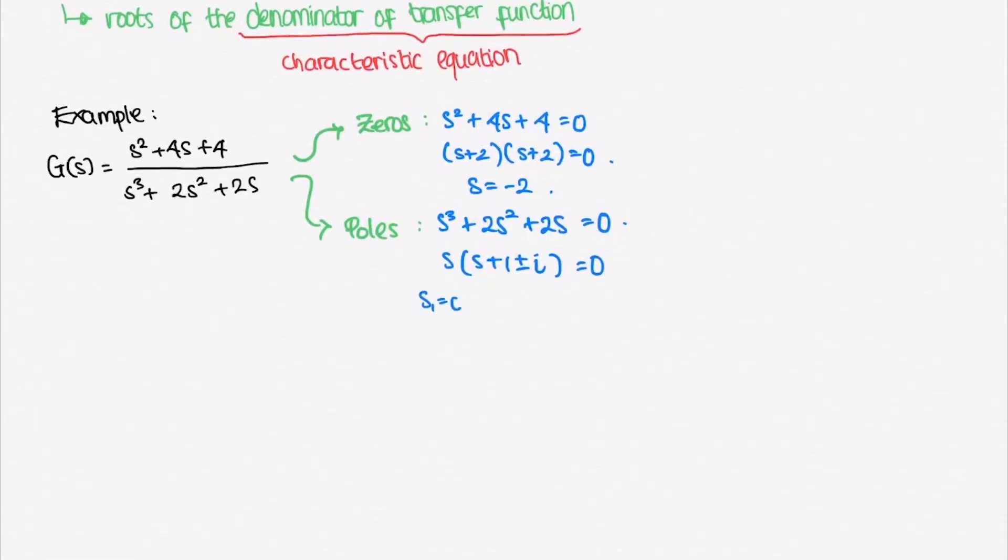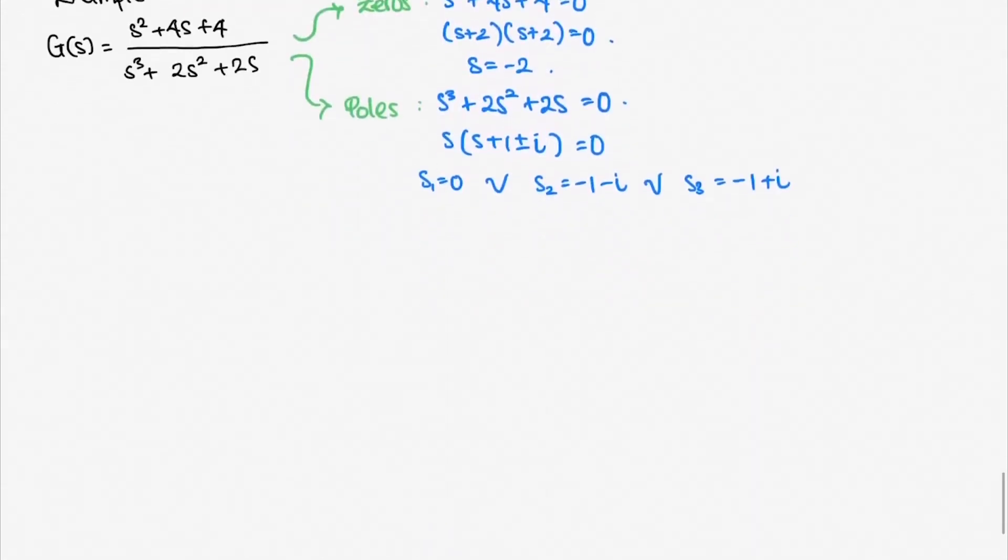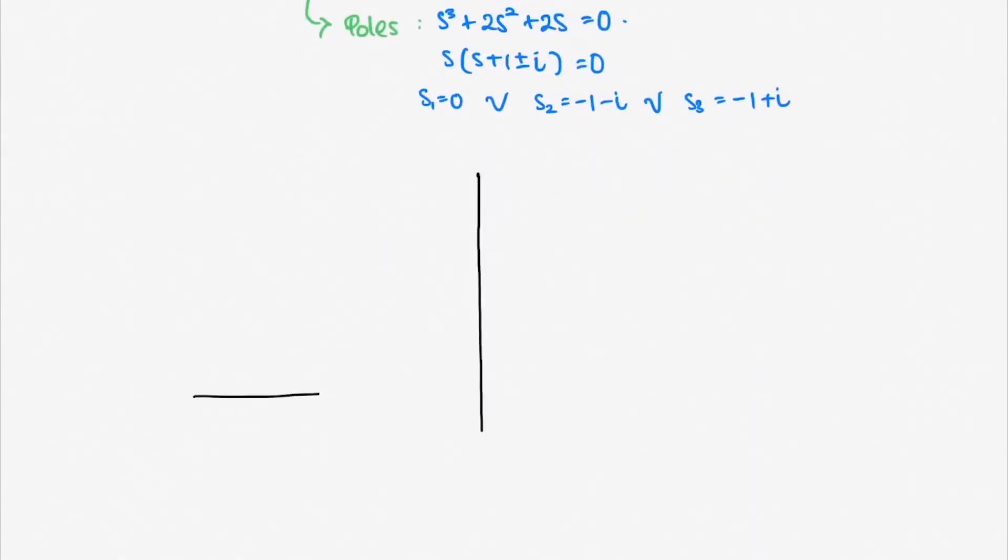To get the poles of the system, we factor out the denominator and we get zero, -1 plus/minus j as its zeros. It is convenient to draw our zeros and poles in the s-plane. We denote our zeros as circles and poles as crosses.